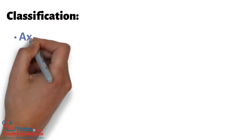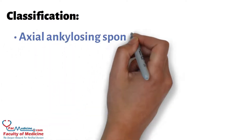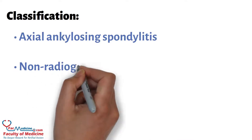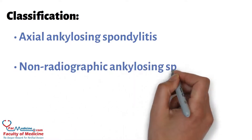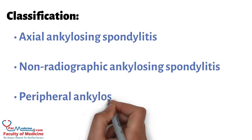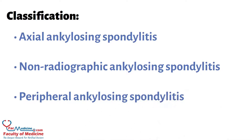Classification: Ankylosing spondylitis is classified into axial ankylosing spondylitis, non-radiographic ankylosing spondylitis, and peripheral ankylosing spondylitis.